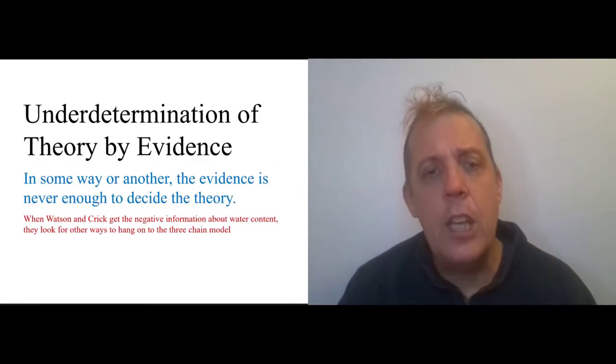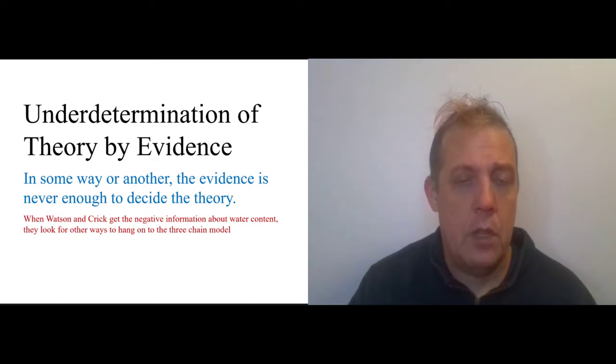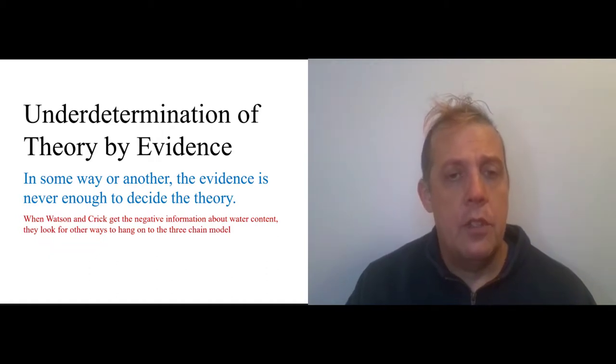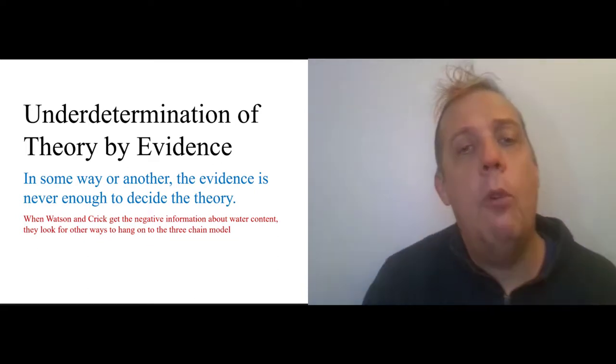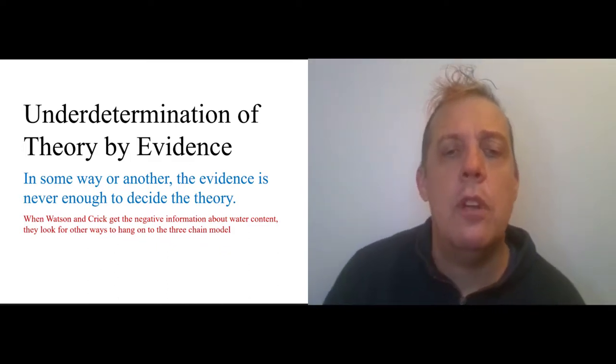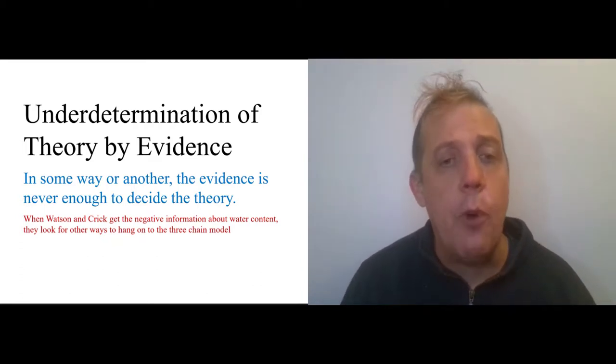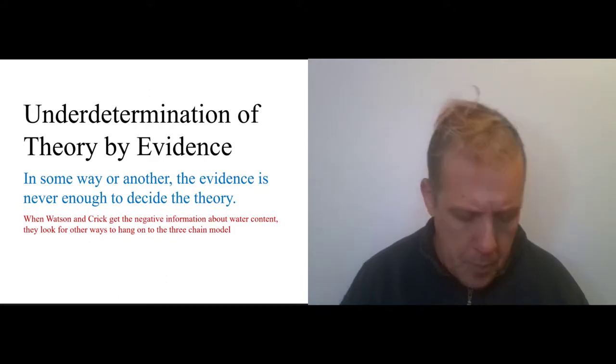Underdetermination of theory by evidence. In one way or another, you never have enough evidence. You can always find more evidence. There will always be unanswered questions. And so, in many ways, the decision to call something proven involves a judgment call. At some point, you have to say, this is going to be enough evidence. Even though one way of putting it is that given a batch of evidence, you can always come up with multiple possible explanations for it. It's just that some of them are going to be more complicated or more clunky or less likely than others. And that's when that judgment call comes in.